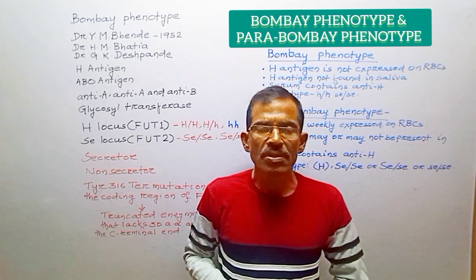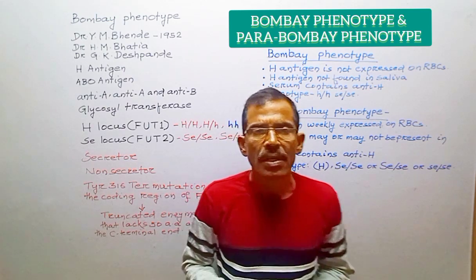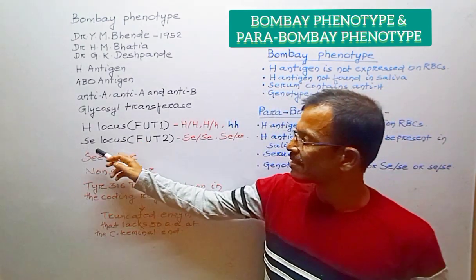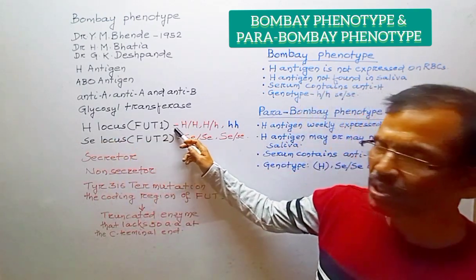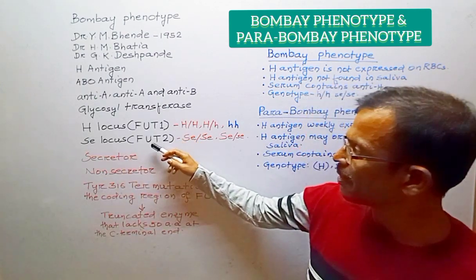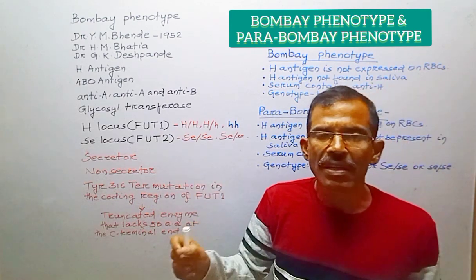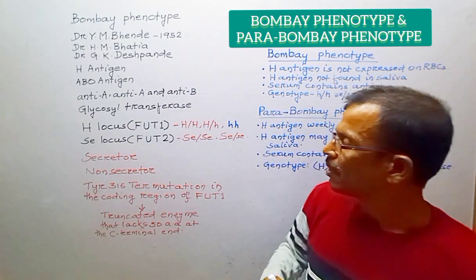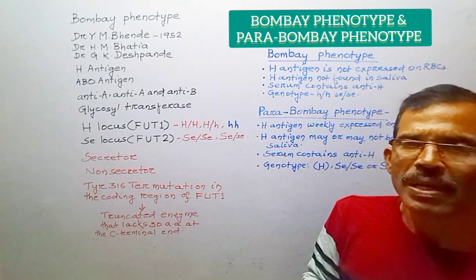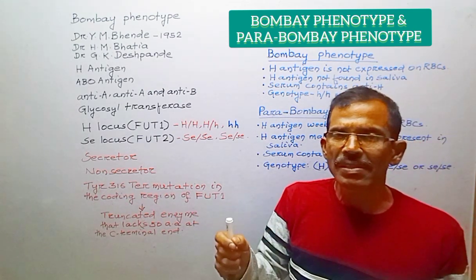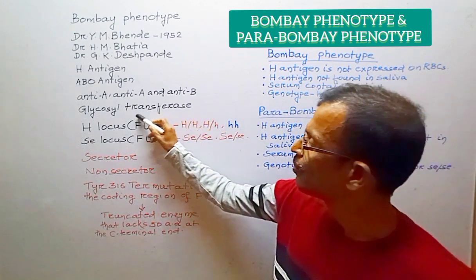Two regions of the genome encode two enzymes with very similar substrate specificities. These two regions are the H locus and the Se locus. The H locus contains the FUT1 gene and the Se locus contains the FUT2 gene. These two genes are tightly linked and are 35 kb apart. FUT1 gene is expressed on red blood cells. To express H antigen on red blood cells, an individual must have at least one functioning copy of FUT1.